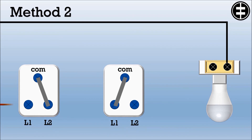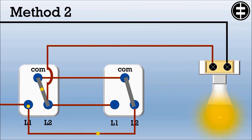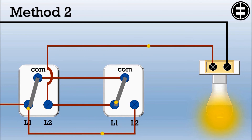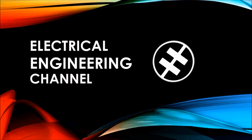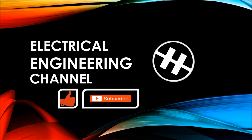For Method 2: connect the line to switch one L1. Connect switch one L2 with switch two L1. Connect both common terminals together. Connect switch one L1 with switch two L2. To complete the circuit, connect switch one L2 to the bulb. If you flip any switch, the bulb will light up, and each subsequent flip will change the bulb status.